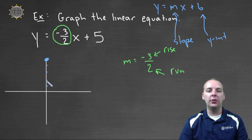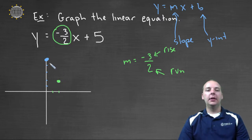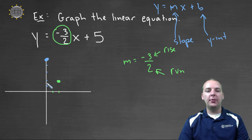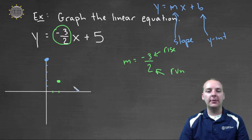So if we go down one, two, three, right one, two, then we'll be right here. And so we've gone down three, right two, so between these two points, the slope between these two points is negative three halves. And matter of fact, we can even do that again. We can go down one, two, three units, and go right one, two units more. And we'll be down here.